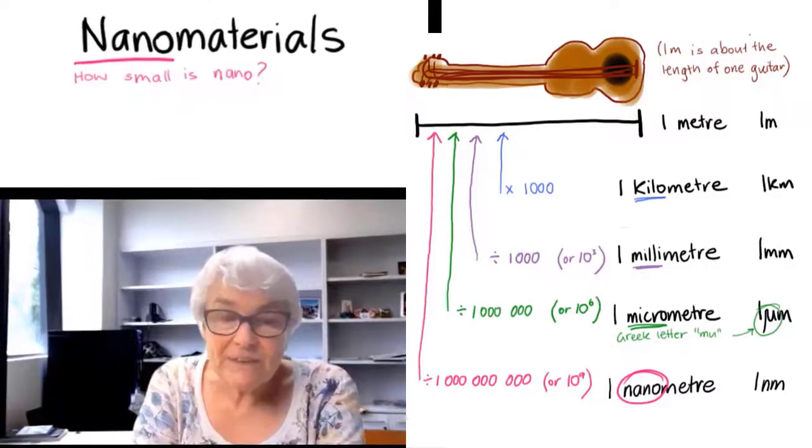So nanomaterials are simply chemical compounds, molecules, or arrays of molecules that have a nanometer size.